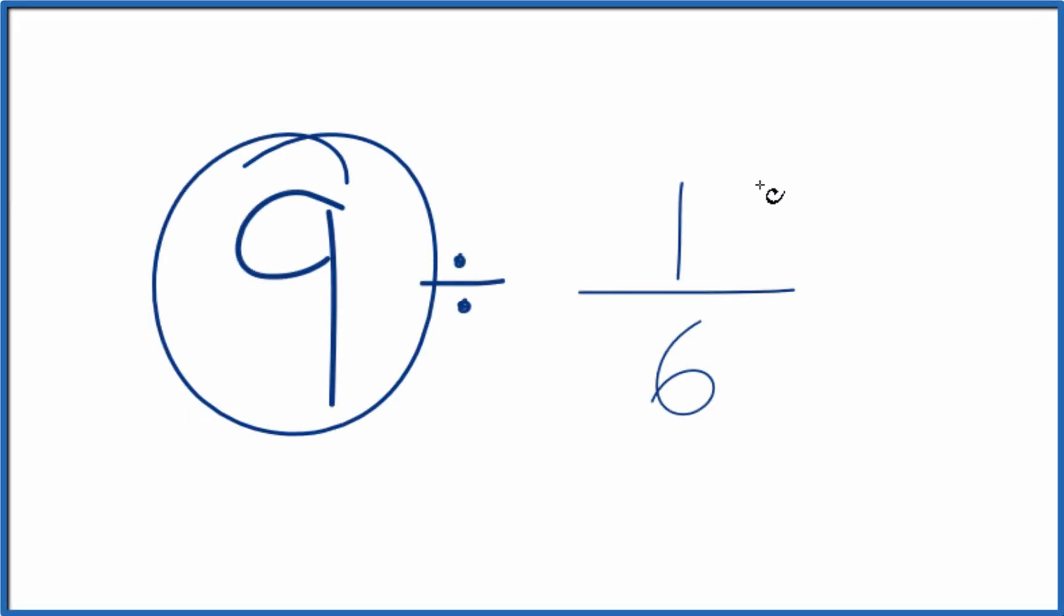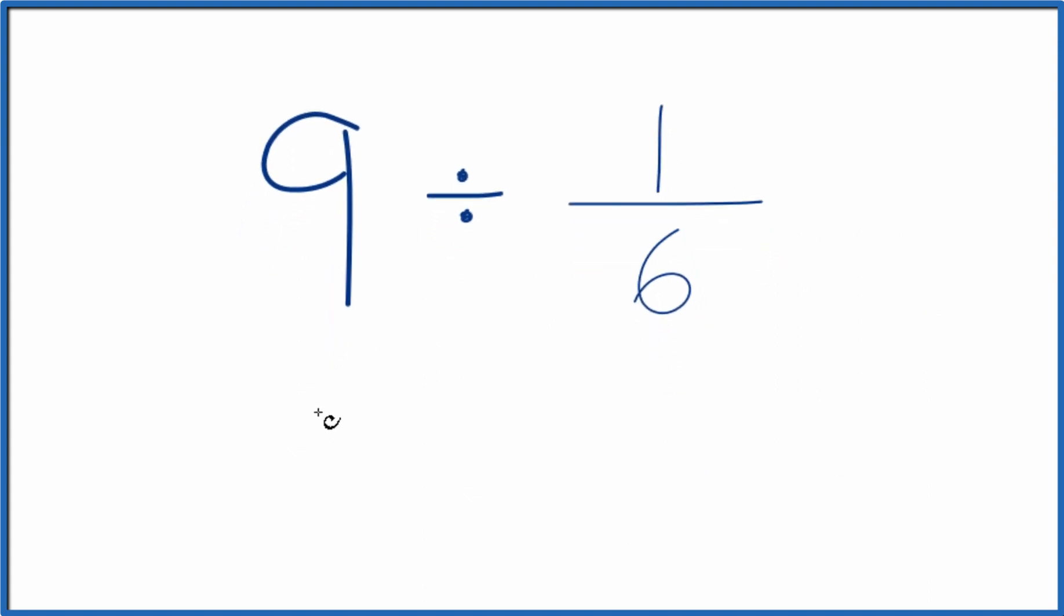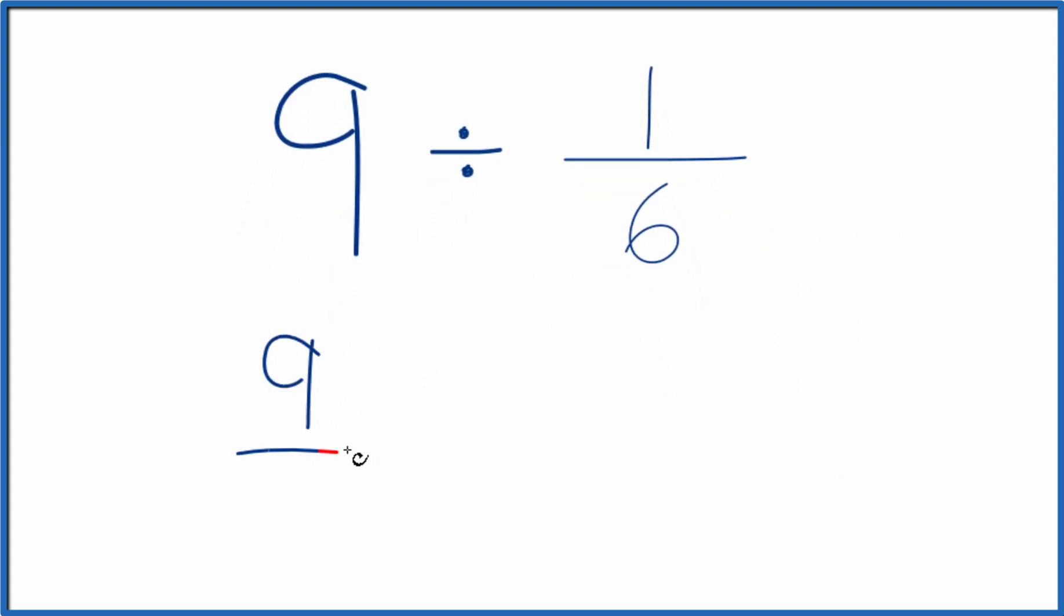Let's divide 9 by 1/6. Here's how we do that. So instead of 9, let's call this 9 over 1. We're just dividing by 1, so it's still 9, but now we have a fraction.